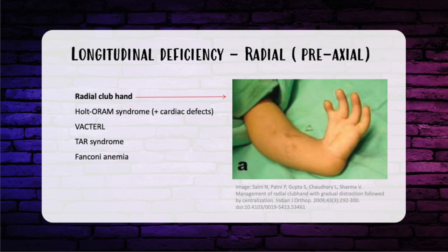Radial longitudinal deficiencies are associated with other anomalies. Holt-Oram syndrome — think cardiac defects like ventricular septal defects or valvular defects. VACTERL stands for vertebral, anal, cardiac, tracheoesophageal fistula, radial, and lower extremity anomalies. TAR — thrombocytopenia absent radius syndrome — often presents with absent radius but a normal thumb. Finally, Fanconi's anemia is a can't-miss diagnosis when you see a child with radial longitudinal deficiency. It must be diagnosed early, before developing aplastic anemia, as there's still an opportunity for a bone marrow transplant. This is tested with a DNA breakage test.